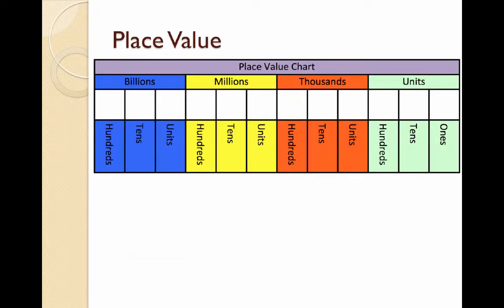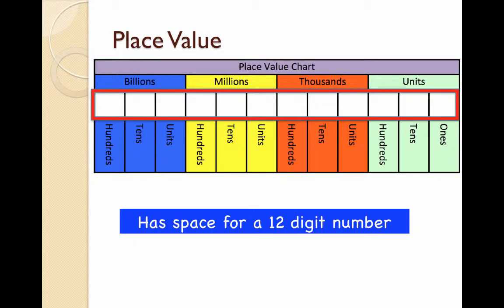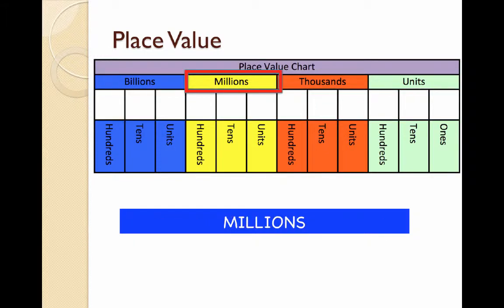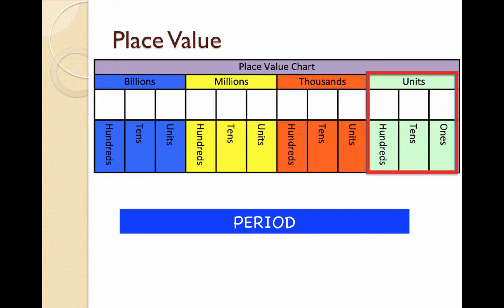This is a place value chart. The white boxes are for digits. It is 12 digits long. Each digit will go into a special group called periods. This is the billions period, the millions period, the thousands period, and the units period. Each period is three digits long.